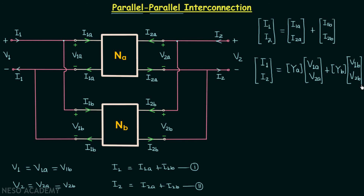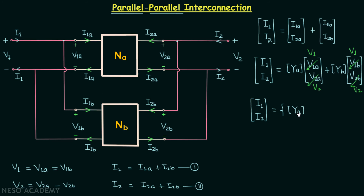Since V1A and V1B are both equal to V1, we write V1 in place of both. Since V2A and V2B are both equal to V2, we write V2 in place of both. Now the Y parameters matrices of network NA and network NB are both multiplied by the same voltage matrix, so we take that matrix common. The current matrix then equals the sum of the Y parameters matrix of NA and the Y parameters matrix of NB, multiplied by the voltage matrix with elements V1 and V2.